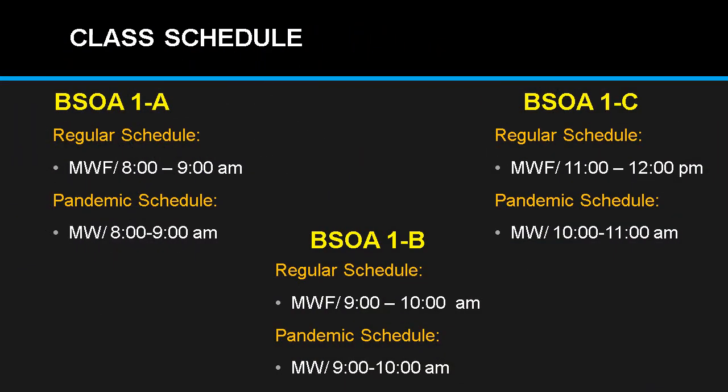Here is your class schedule for BSOA Section A. For your regular schedule, we have Monday, Wednesday and Friday, 8 to 9 AM — we will meet three times a week. For the pandemic schedule, it is only Monday and Wednesday, same time 8 to 9. For BSOA Section B, the same subject but your time is 8 to 10 AM. For the pandemic, Monday and Wednesday same time. For Section C, Monday Wednesday and Friday 11 to 12 PM, and for the pandemic schedule it is Monday and Wednesday 10 to 11 AM. Please take note of the schedule.